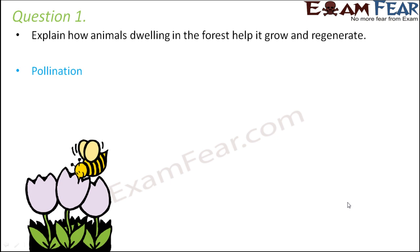There are a couple of things in which animals help the plants, either in their growth or in their reproduction. One such function is pollination. Pollination is the first step of sexual reproduction in plants. What happens in pollination is that pollen grains are transferred from the male reproductive part to the female reproductive part, and this transfer is facilitated by insects, birds, and small animals like rats.